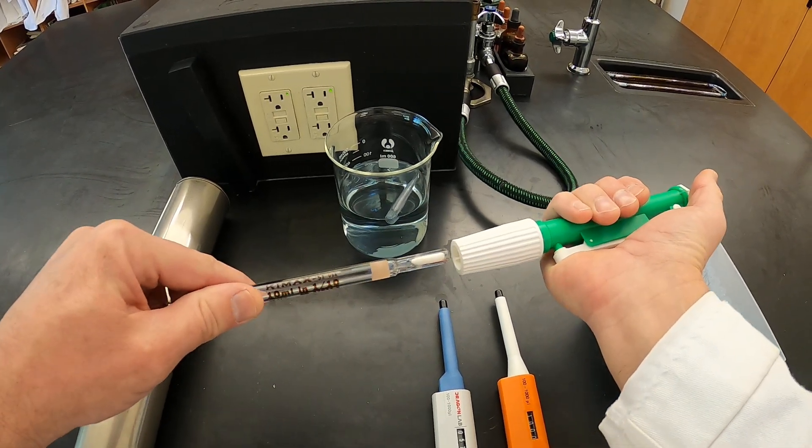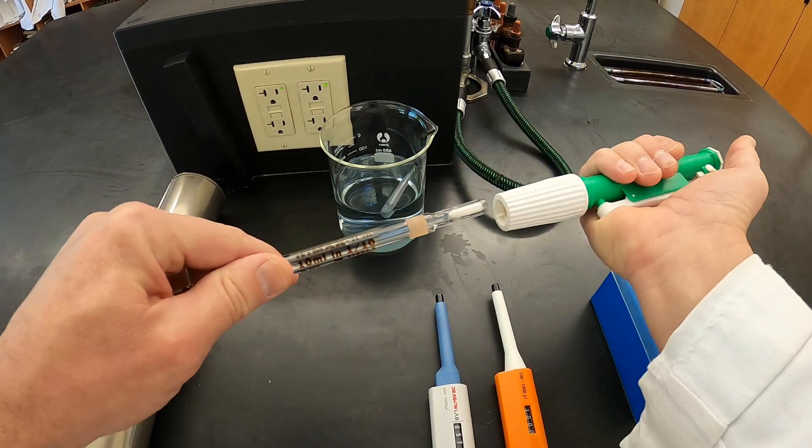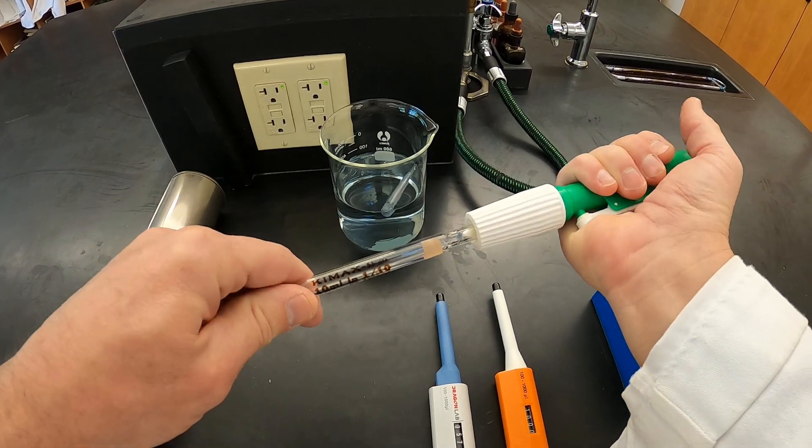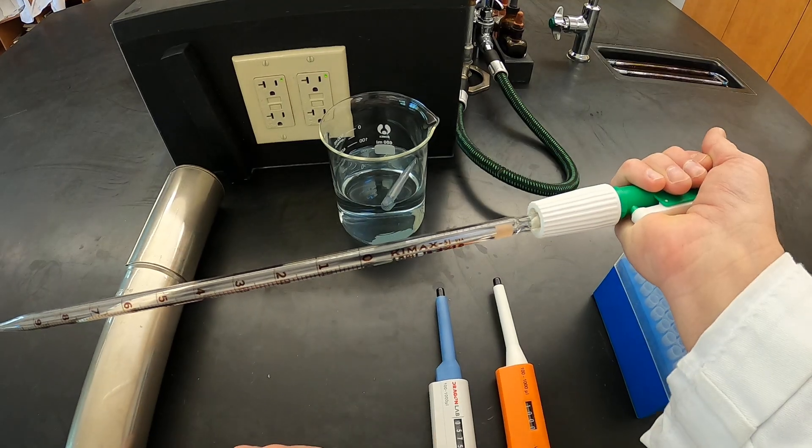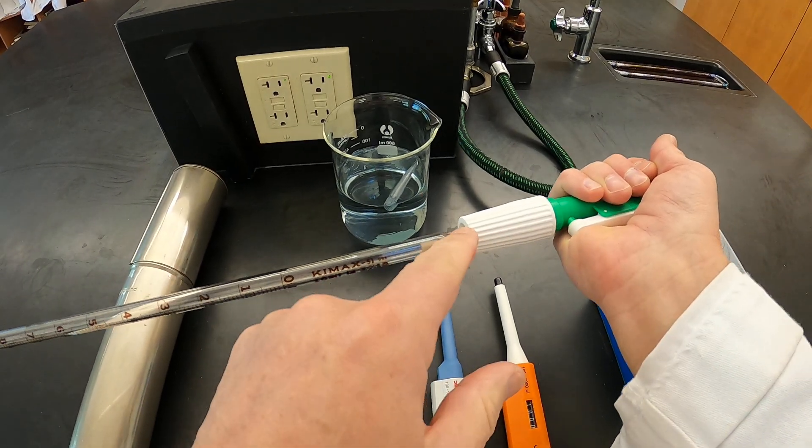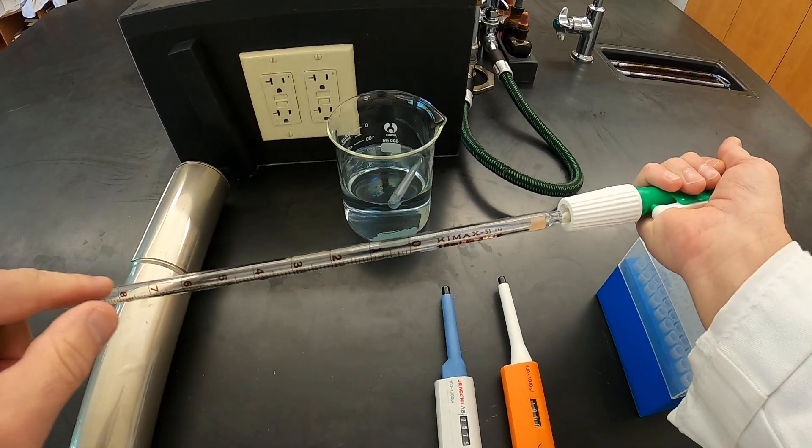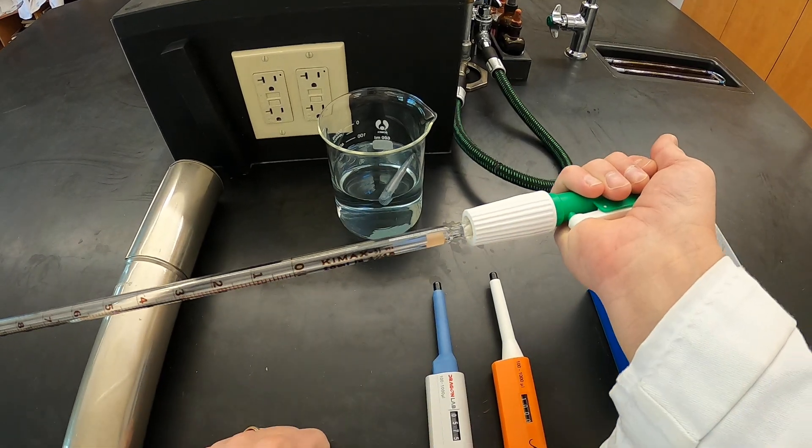What you're going to be doing is you're going to be shoving the end of the pipette carefully into the pipetting device and give a little twist just to make sure you've got a nice secure seal on here. If you get leaking with your pipette, then you need to go back and check your seal again.